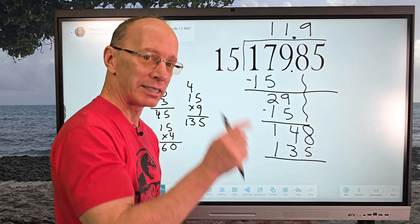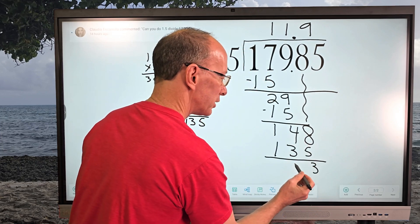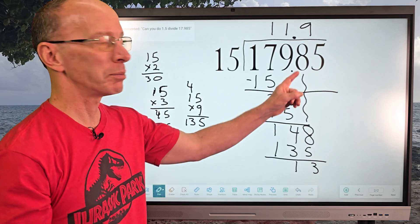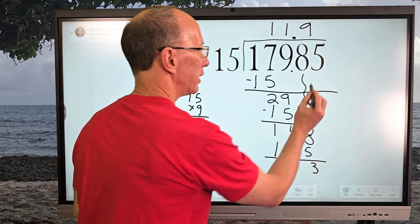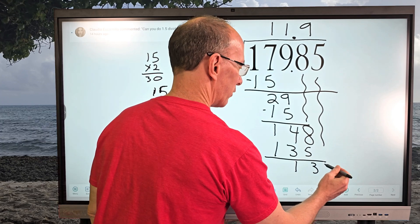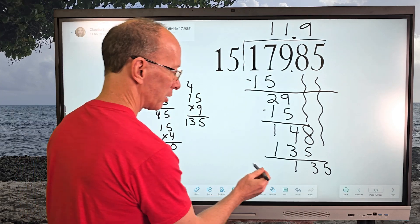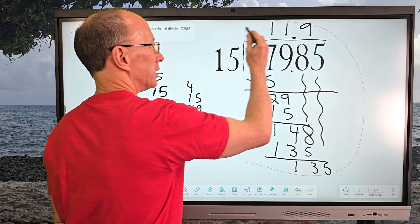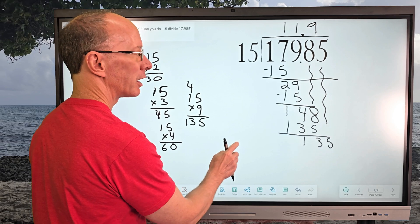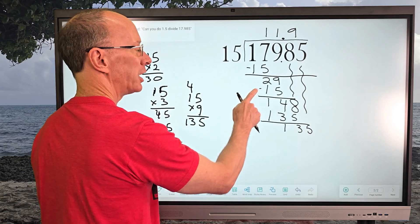Now I subtract: 8 minus 5 is 3, and 4 minus 3 is 1. Our next step is to drop the next number down — that's our 5 — all the way down here. Let's make this problem a little bit smaller on the board. This is quite a big problem! How are you doing on your paper? Did you try this out?